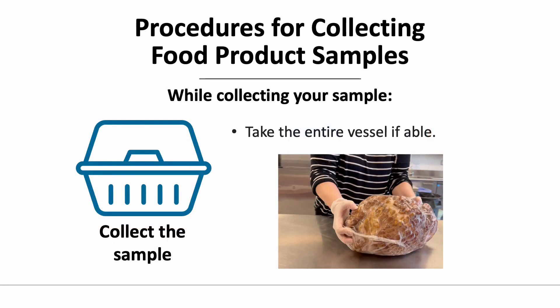It is best to collect food products in their original state and container — for example, this entire meat chub shown below in its original packaging. Submitting the product in its original packaging can be essential for ensuring lot code information is preserved, which can be important for facilitating follow-up regulatory actions.